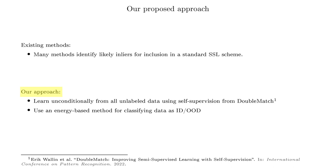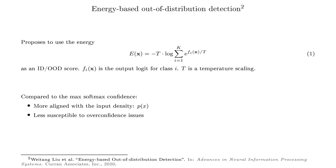The energy-based out-of-distribution detection is proposed in a NeurIPS paper. It is a scalar computed as the log of the sum of the exponent of the predicted logits from the neural network. This score will generally take lower values for ID data than for OOD data. Compared to the commonly used baseline of the maximum softmax confidence, this score is theoretically aligned with the input density and has fewer overconfidence issues.